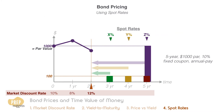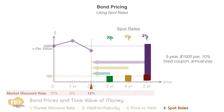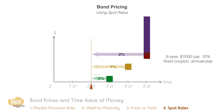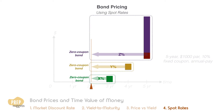If we isolate the cash flows, each of them can be viewed as a zero coupon bond maturing at the date of the cash flow. The spot rate can therefore be viewed as the yield of the zero coupon bond.